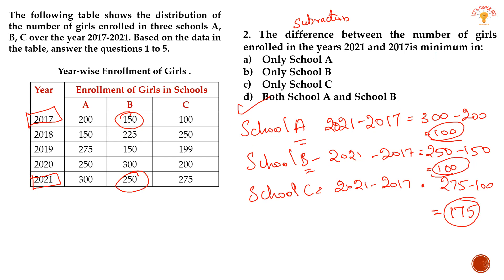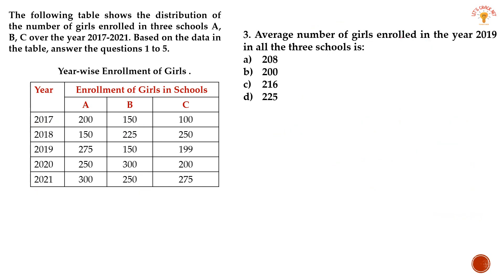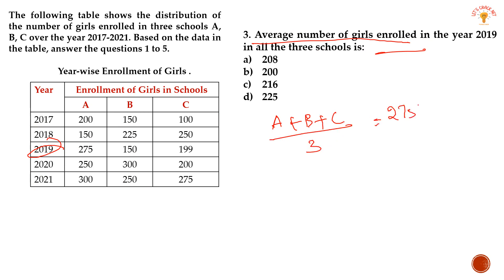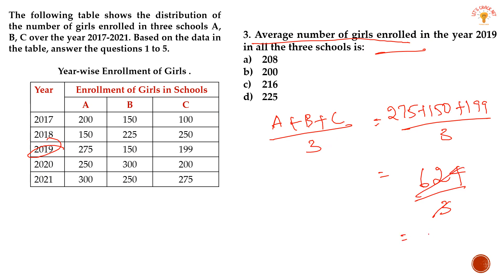The number of girls enrolled in 2019 in all three schools is to be found. In 2019, A plus B plus C gives the total average divided by 3. So, 275 plus 150 plus 199 divided by 3 — working through the arithmetic: 624 divided by 3 — we get 208. So, 208 will be the average number of girls enrolled in the year 2019.